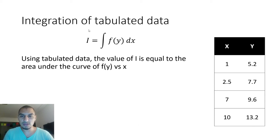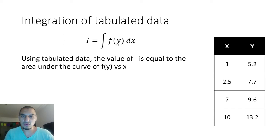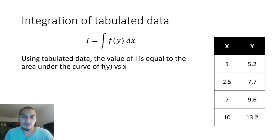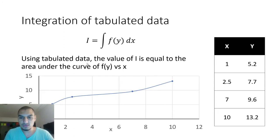You have the integration output I, which is the integration of f(y) dx, where y is a function of x. The general form can be f(x, y). In a case like this, you have a table with values obtained experimentally for x and y, and you don't have any other input to get the value of the integration — you need to use this data to do the integration.